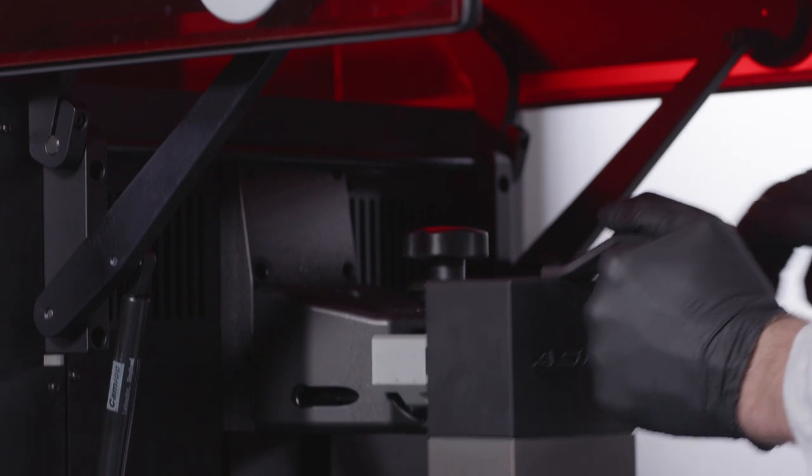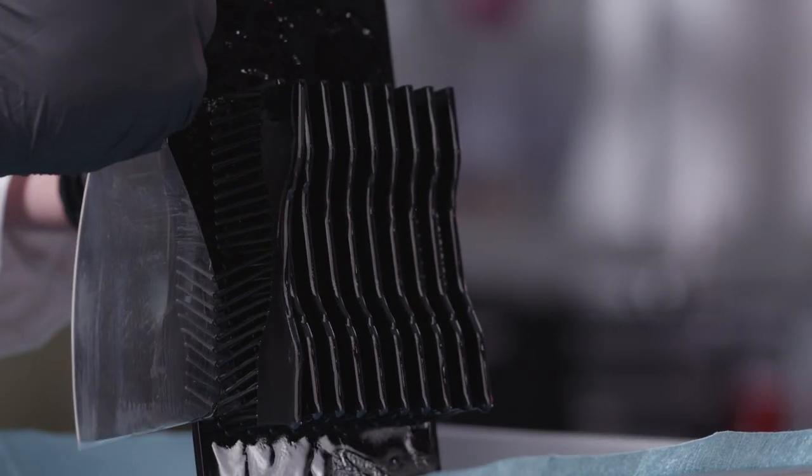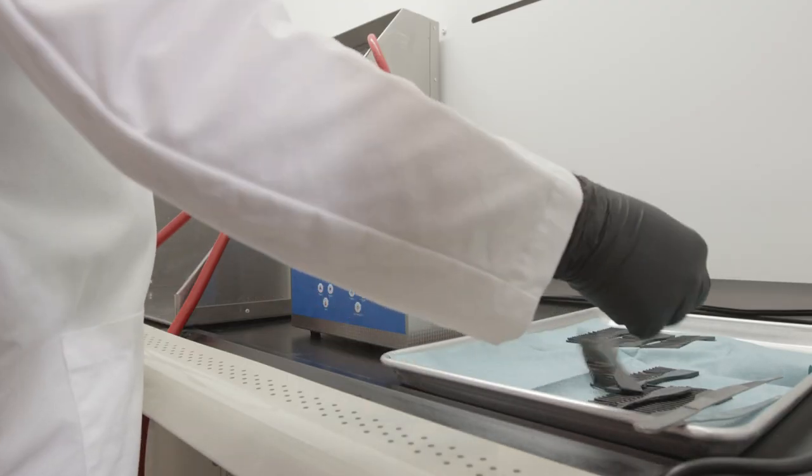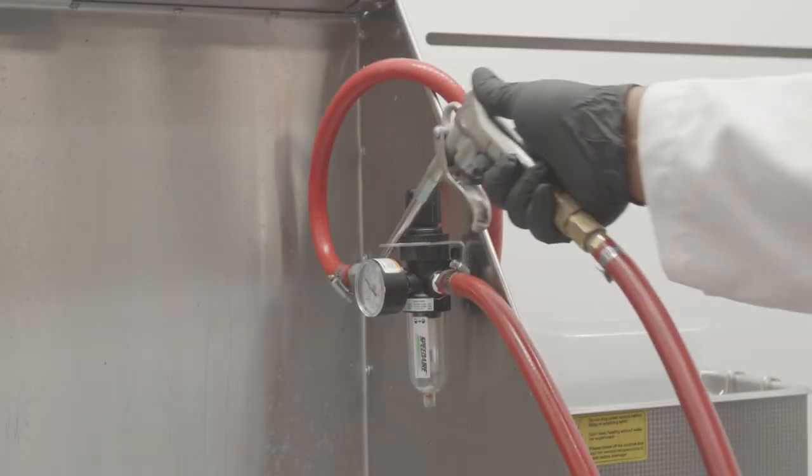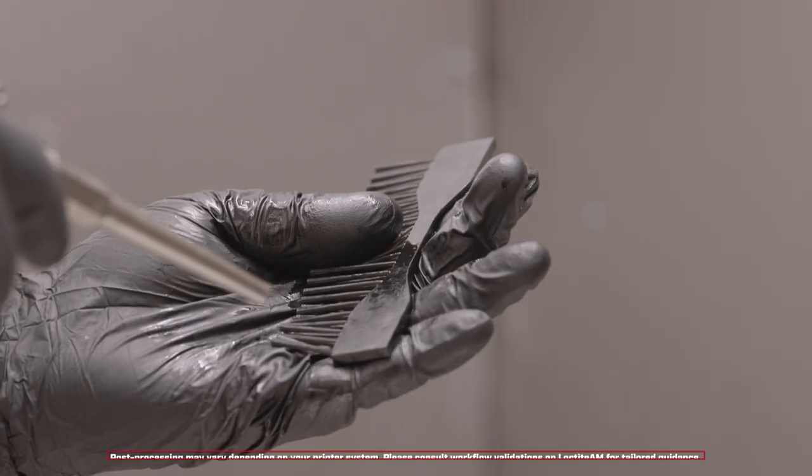Once your part has been removed from the build platform and support structures have been removed, the part should then be washed. Conduct the first wash cycle and dry using compressed air. Then if needed, wash the product again and dry with compressed air.